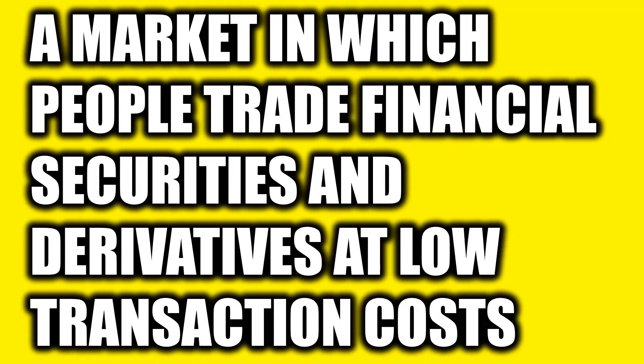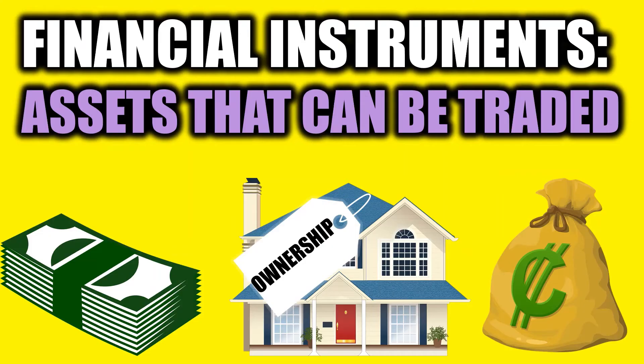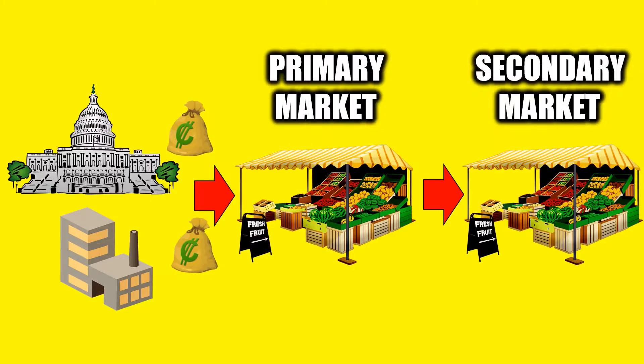Financial markets are markets in which people trade financial securities and derivatives at low transaction costs, or structures through which funds flow, where they contain financial instruments or securities which are assets that can be traded. Corporations would use these markets to raise funds by issuing new securities in primary markets and then traded in secondary markets. And this sets up the next three market types that we'll be exploring.